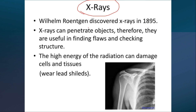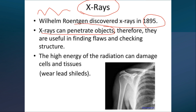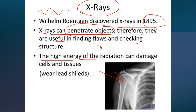X-rays were discovered by Willem Röntgen in 1895. X-rays have high frequency, allowing them to penetrate objects, making them useful for finding structural flaws and in medical imaging — they can pass through body muscles to reveal internal flaws. However, due to their high energy, X-rays can damage cells and tissues, so lead shields should always be worn during X-ray exposure.